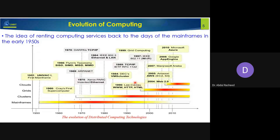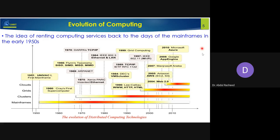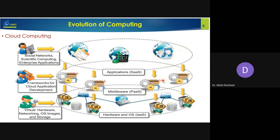The evolution from the 1950s to today shows that cloud computing is not a basic or standalone technology — it is a derived technology. The cloud computing environment came from the distributed environment, which came from client-server, which came from networking systems. All these technologies — renting from mainframes, virtualization, IEEE standards, Ethernet, LAN, and Web 2.0 — were adopted together to introduce the cloud computing environment.